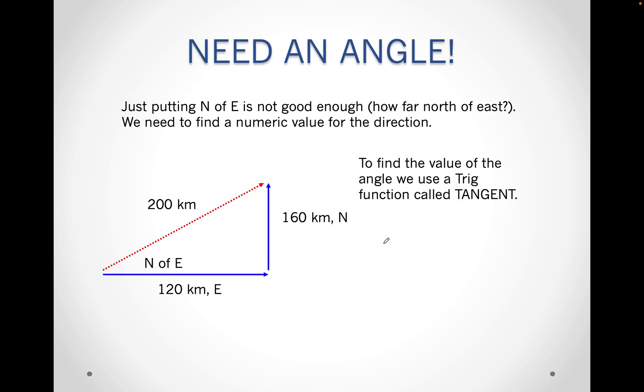We also need an angle to find this because it's a vector. It has a direction, so we use an angle. This is north of east, which basically means I'm going from the east towards the north. What is important is figuring out this angle, and we will use tan of this one.